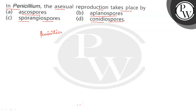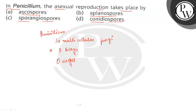What is Penicillium? This is a multicellular fungi. This multicellular fungi can reproduce by three ways or three manners: one is vegetative reproduction, second is sexual reproduction, and third is asexual reproduction.